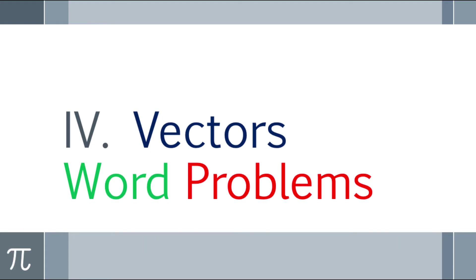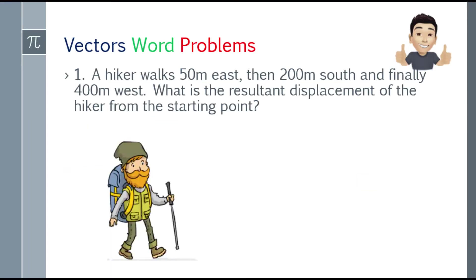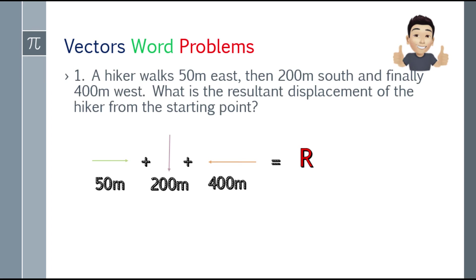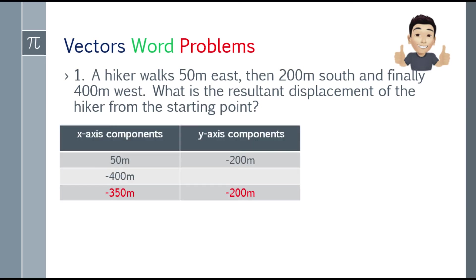Alright, so last topic: vectors word problems. First question: a hiker walks 50 meters east, then 200 meters south, and finally 400 meters west. What is the resultant displacement of the hiker from the starting point? Let's visualize it — the hiker walked 50 meters east, then went south 200 meters, and finally 400 meters west. We need to find the resultant displacement, so we'll construct a table for x and y axis components.